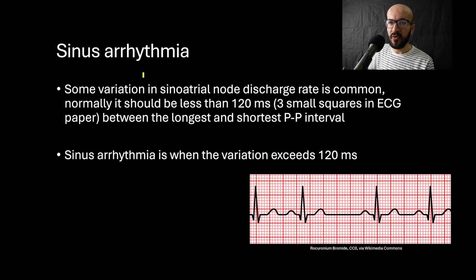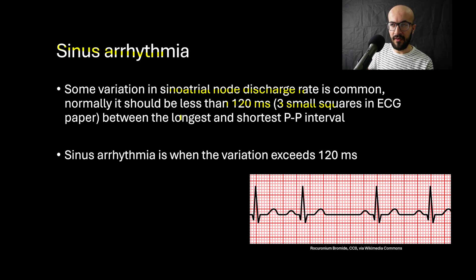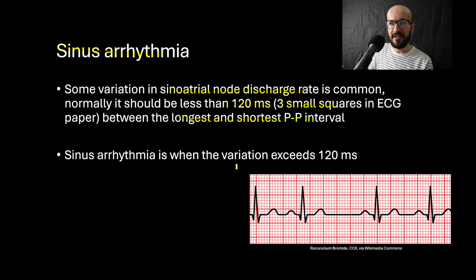In this video we will talk about sinus arrhythmia. Commonly there is some variation in the sino-atrial node discharge rate, and normally it should be less than 120 milliseconds, which equals three small squares in the ECG paper — less than three small squares between the longest and shortest P-to-P interval. Sinus arrhythmia is when the variation exceeds 120 milliseconds.